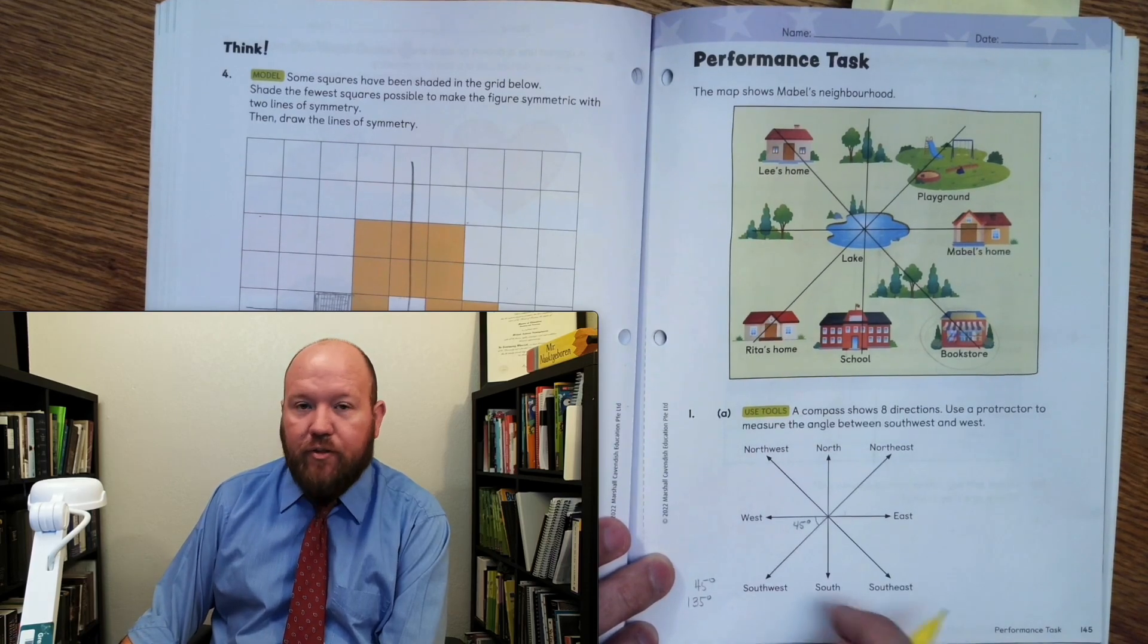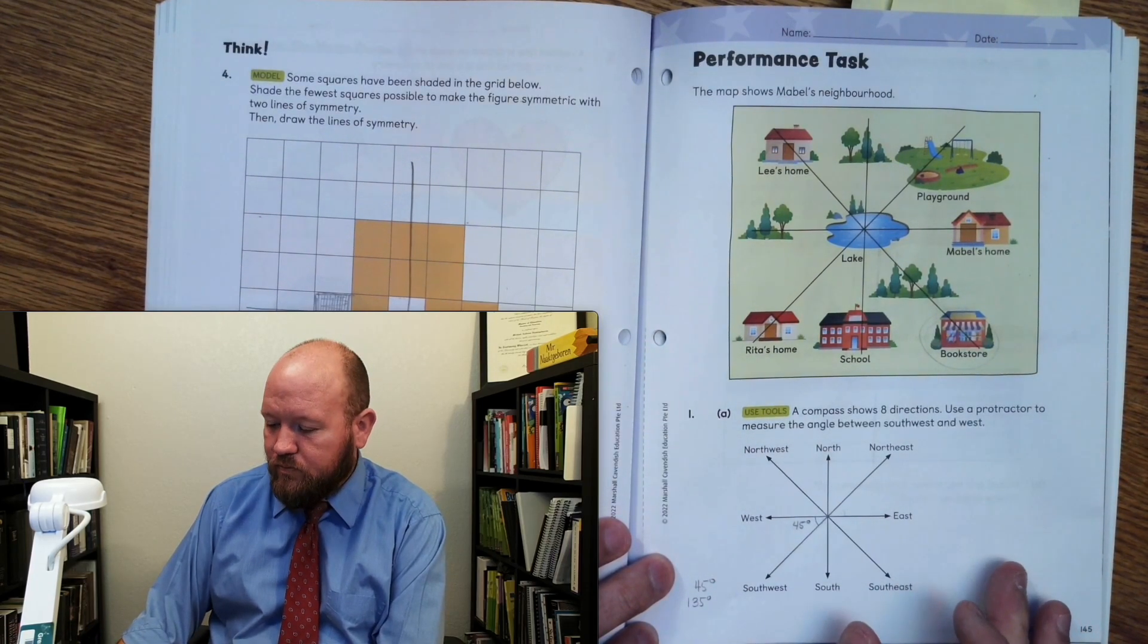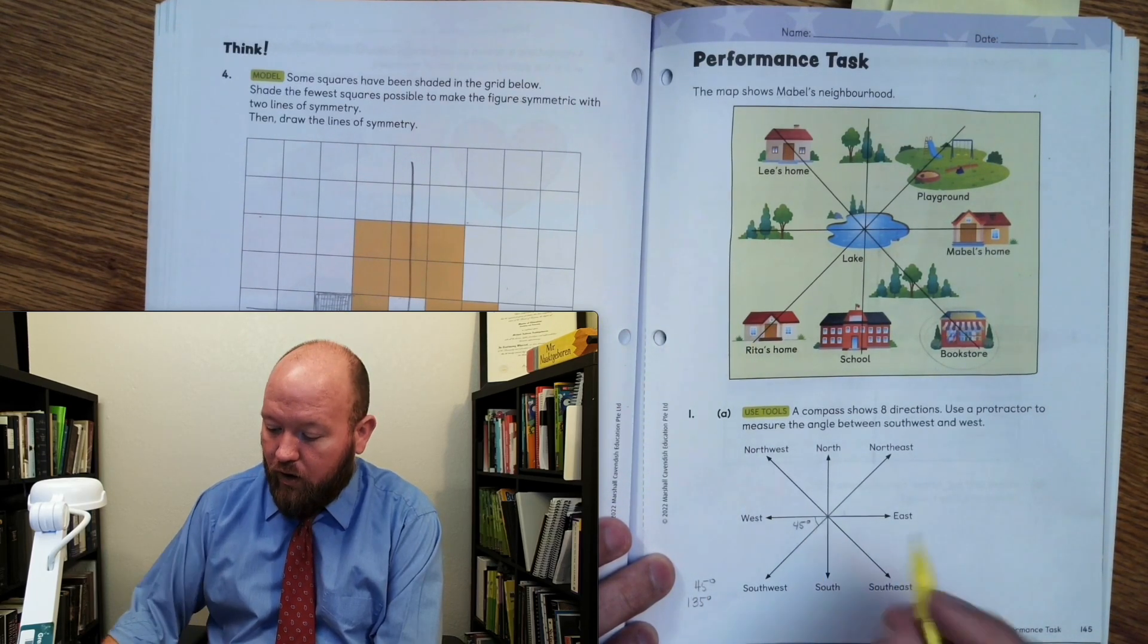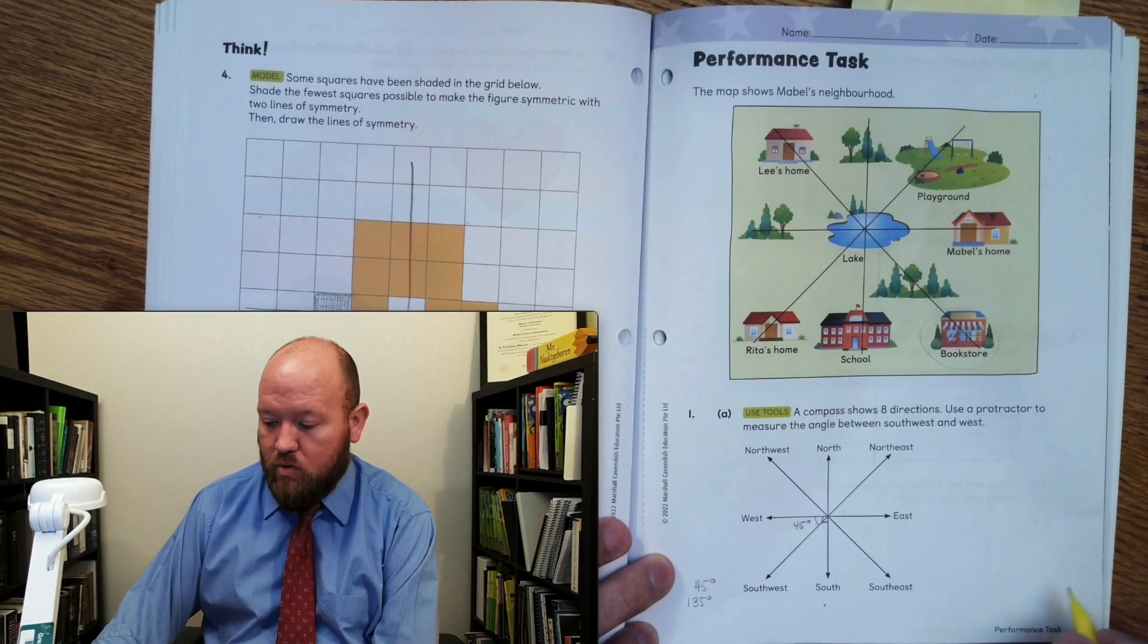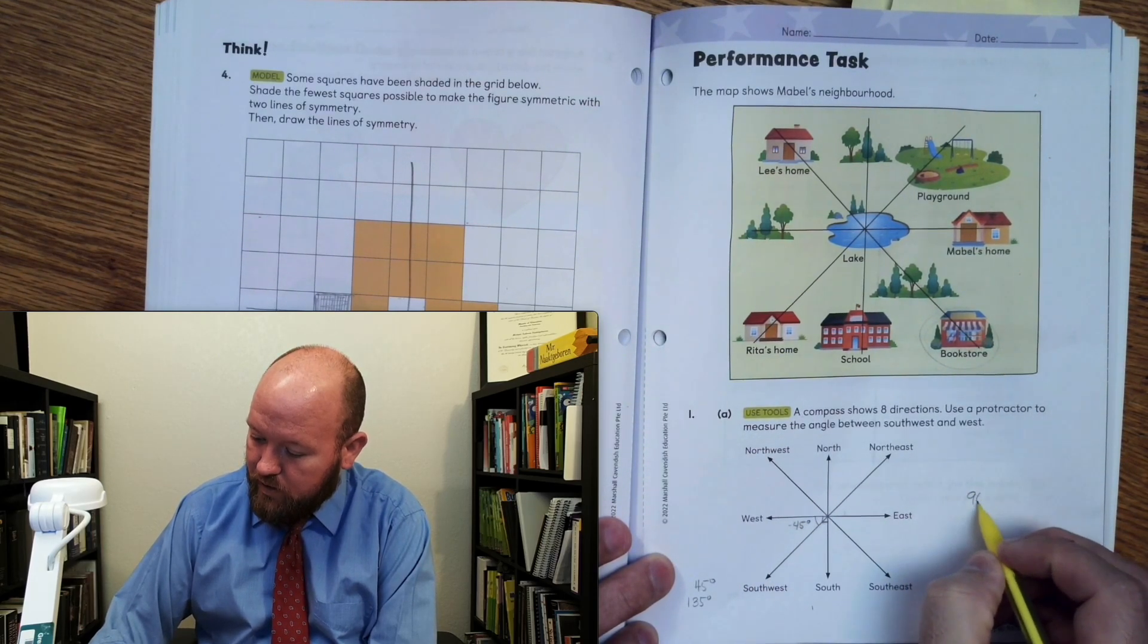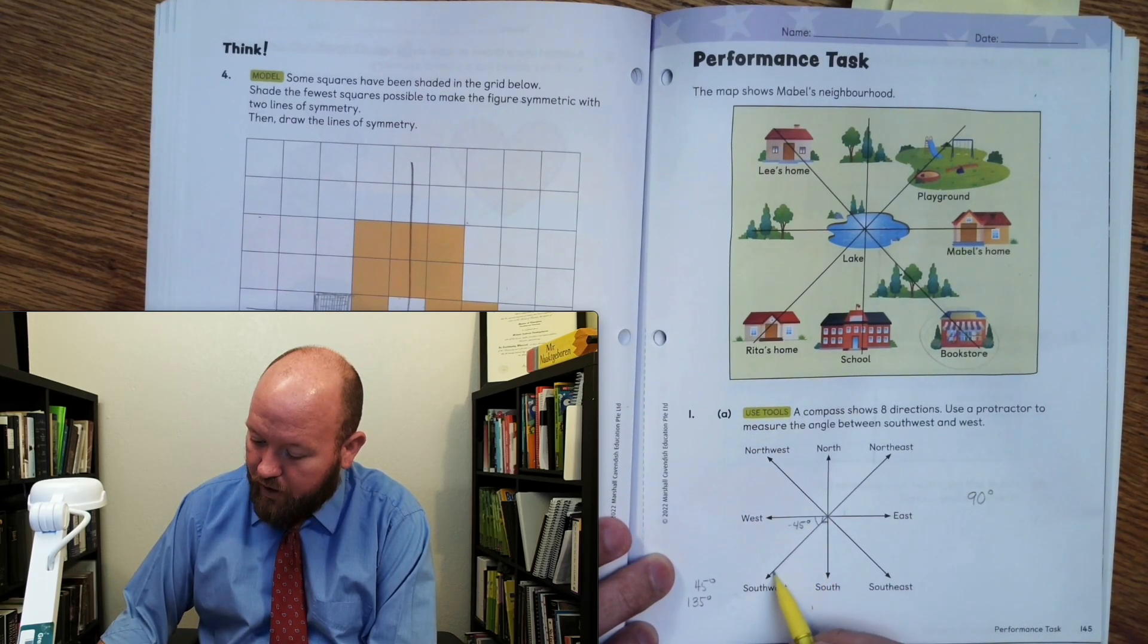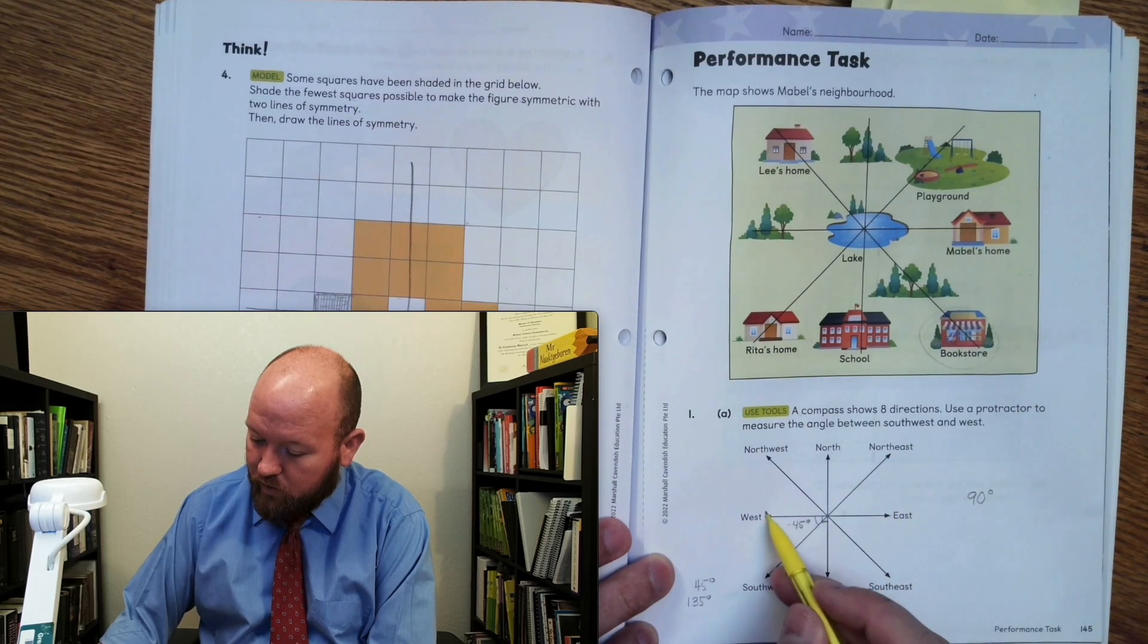Now, we could have figured this out another way without ever having to use our protractor. How else could we have found this? Well, I know that this angle right here is a right angle, right? So this is going straight up and down. This is going straight left and right, so that's a right angle. So that's 90 degrees, and I know that this line right here cuts right in the middle. The southwest line cuts right in the middle between south and west.